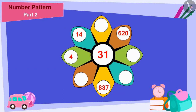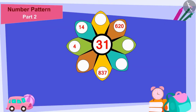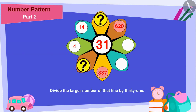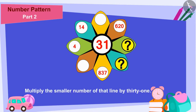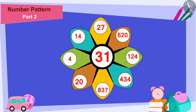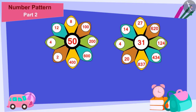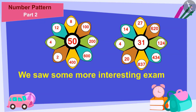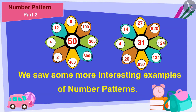Children, can you fill in the blanks of this toy according to the rules of the puzzle that Golu and Shere Khan solved? There is a smaller number at one end of each line and a larger number at the other end. To find the smaller number for each line, divide the larger number of that line by 31. And to find the larger number, multiply the smaller number of that line by 31. In this way we can fill all the blanks. Children, in this video we saw some more interesting examples of number patterns. In the next video we will see some more interesting examples.